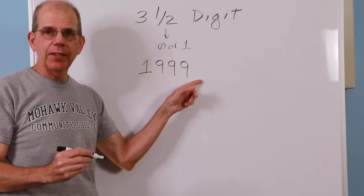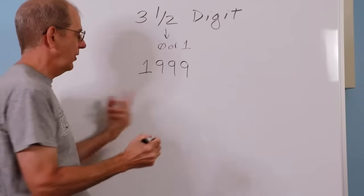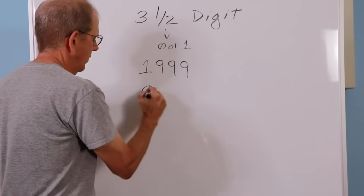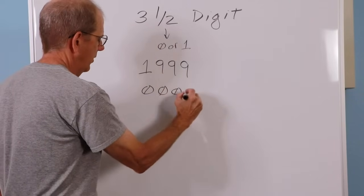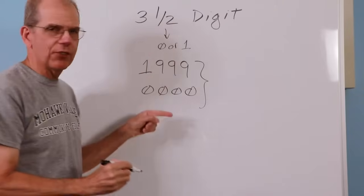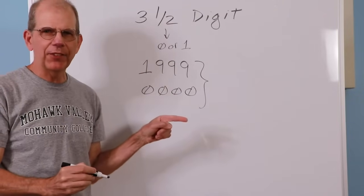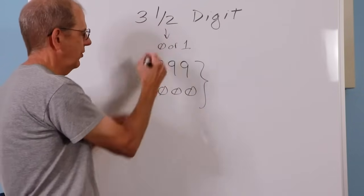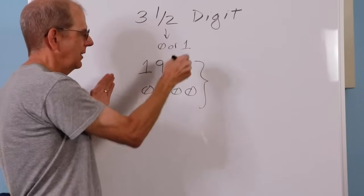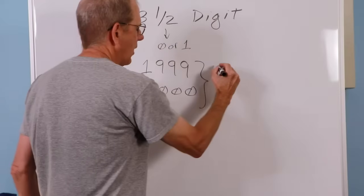That's the biggest number that this meter can show. Of course, the smallest is all zeros. So this becomes the possible range of values that you get on this meter. All zeros to 1, 9, 9, 9. Again, that's a total of 2,000 counts.